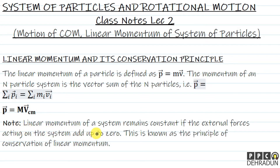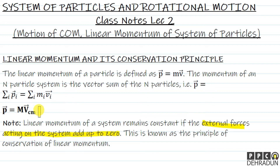Next note point: linear momentum of a system remains constant if the external forces acting on the system add up to zero. This is known as the principle of conservation of linear momentum. This is correct because if the sum of external forces is zero, acceleration of center of mass becomes zero, so velocity of center of mass doesn't change. Since mass is constant and velocity of center of mass is unchanged, linear momentum of the system remains constant. This is the principle of conservation of linear momentum, and we are going to solve many problems on this concept today.